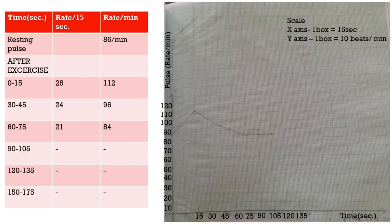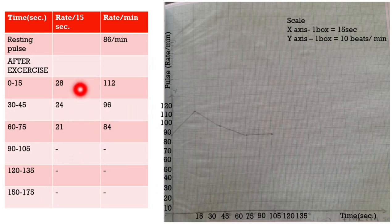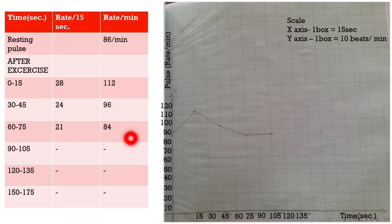As you can see on the left side, there is a tabular column. The first column is time in seconds, the second column is rate per 15 seconds, and the third column is rate per minute. We obtain the data and fill the first column, then fill the second column corresponding to the time. The rate obtained in the second column should be multiplied by four and converted to rate per minute, then filled in the third column.